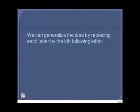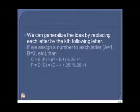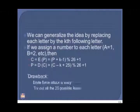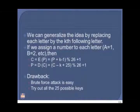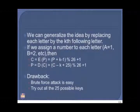This is the mathematical representation of the Caesar cipher. Even though the Caesar cipher is successful to a certain extent, it has two main drawbacks: it is easy to obtain the key through a brute force attack, and an intruder can try out all 25 possible keys.